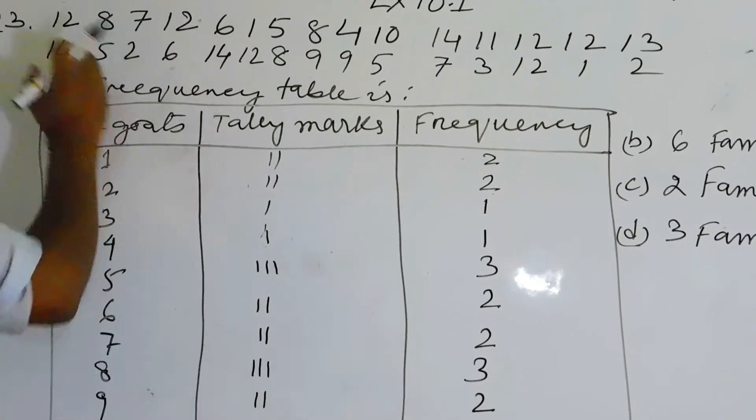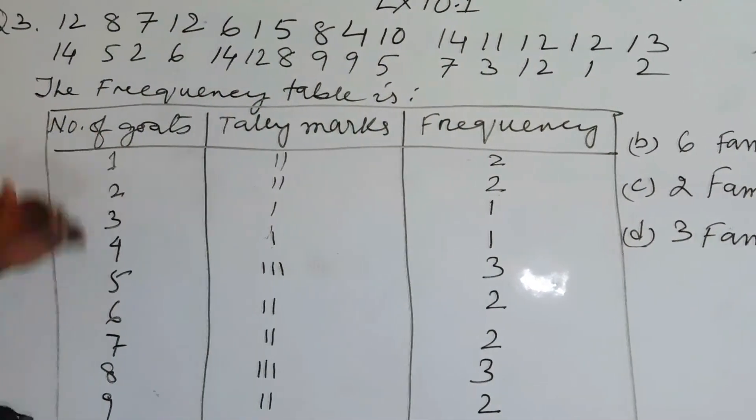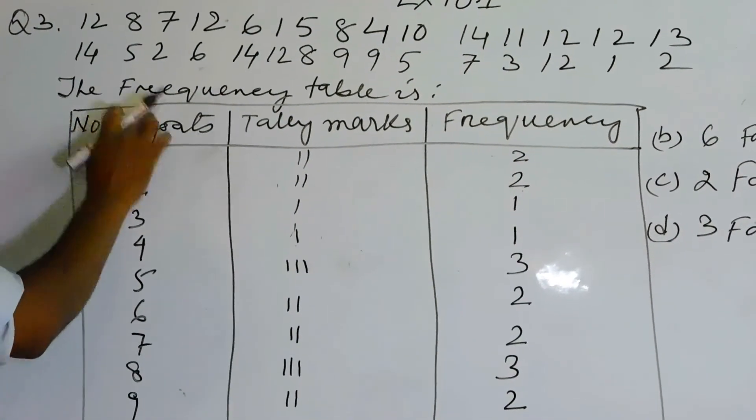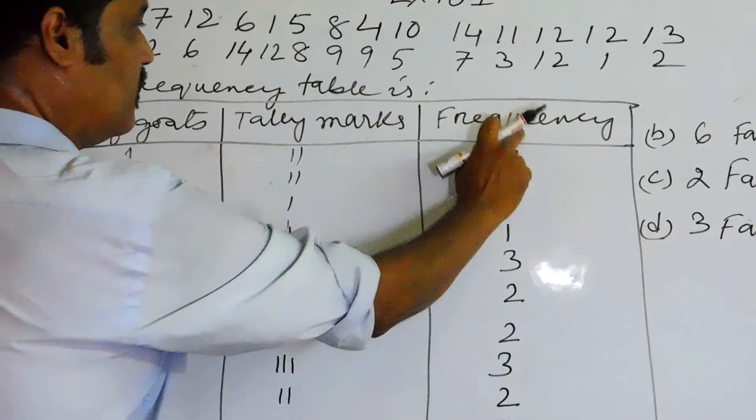Now here 30 families are there, so 30 data should be there for 30 families. Now going to the frequency table, here first column will be number of goats, second will be tally marks and the third will be frequency.